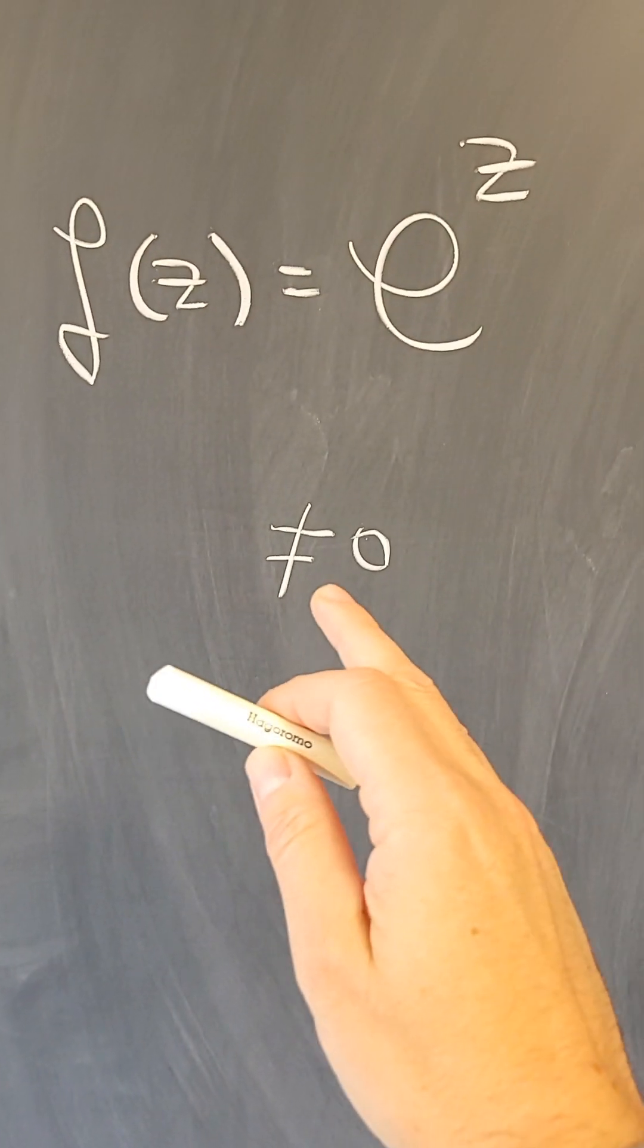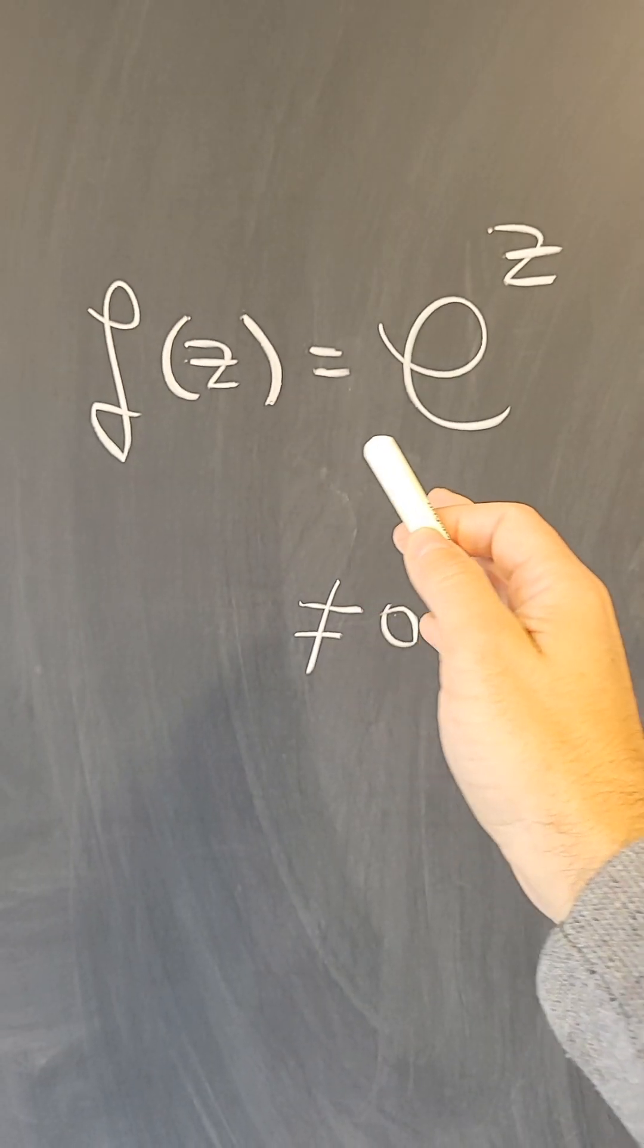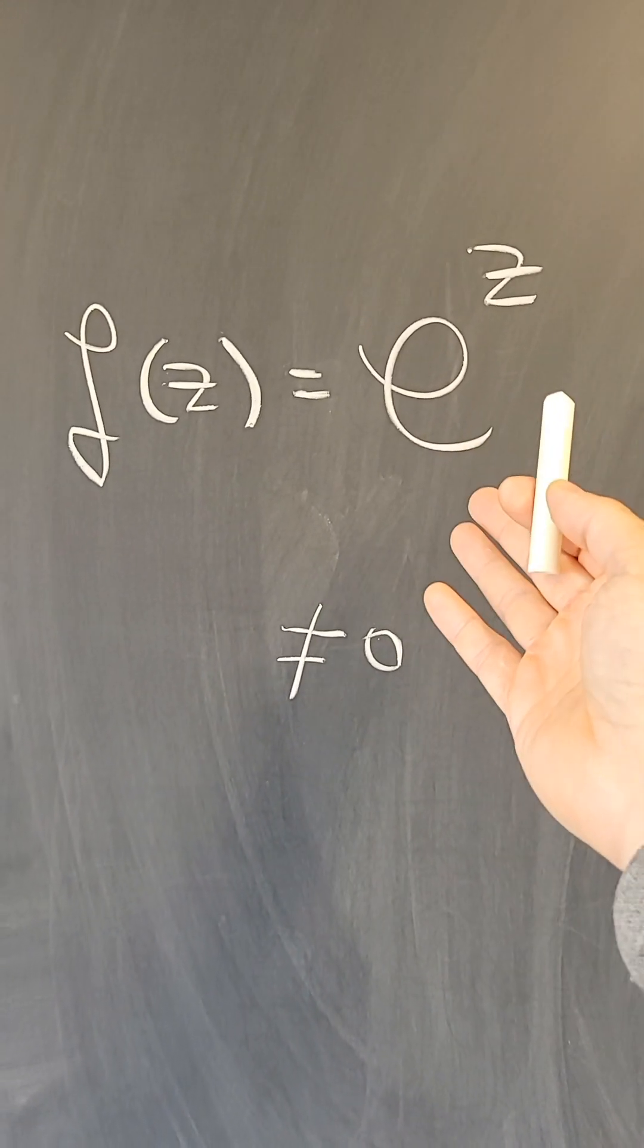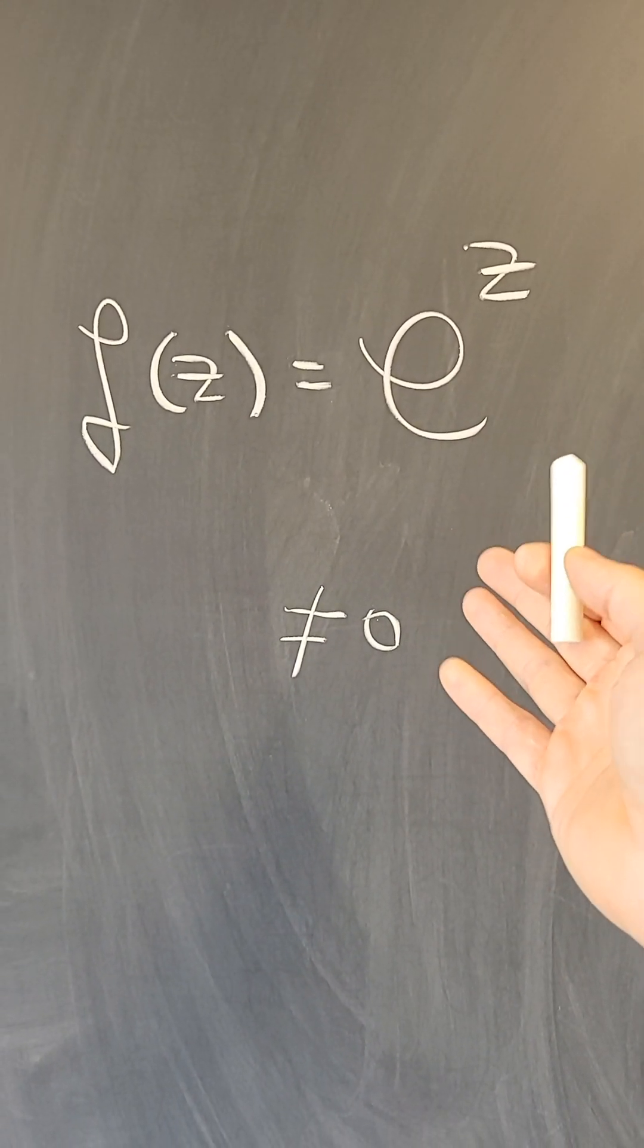It's critical because, for example, the exponential function—the complex derivative of e^z is itself, just like in the real case. However, it's never zero.